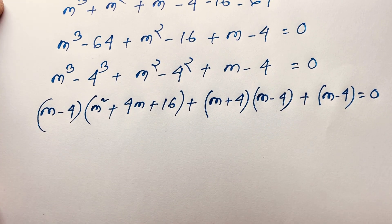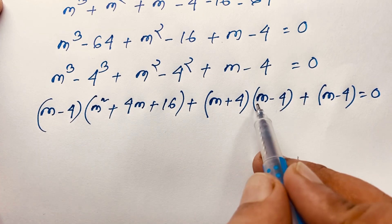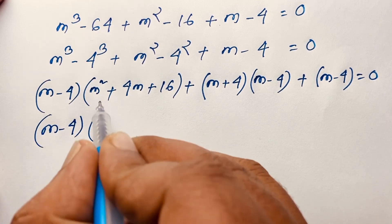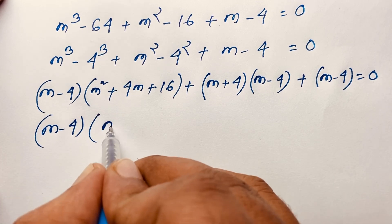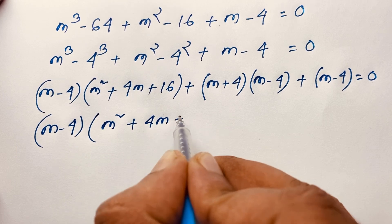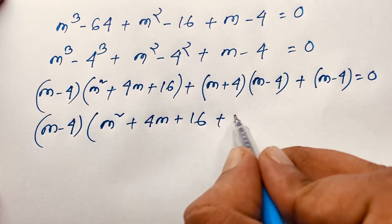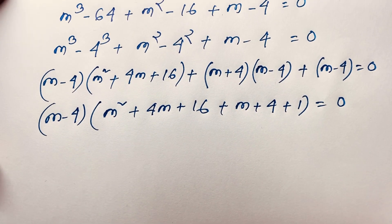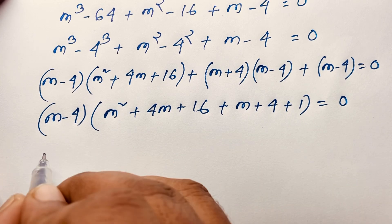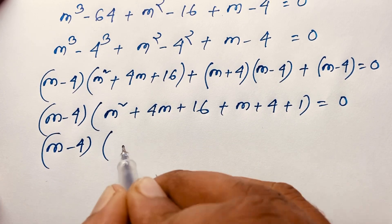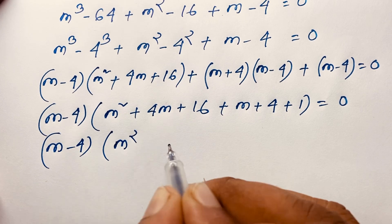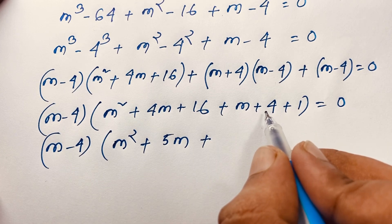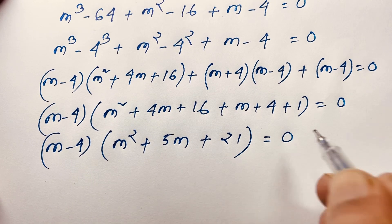Now (m − 4) is common throughout all three terms. Factoring it out: (m − 4) times [m² + 4m + 16 + m + 4 + 1] = 0, which simplifies to (m − 4)(m² + 5m + 21) = 0.